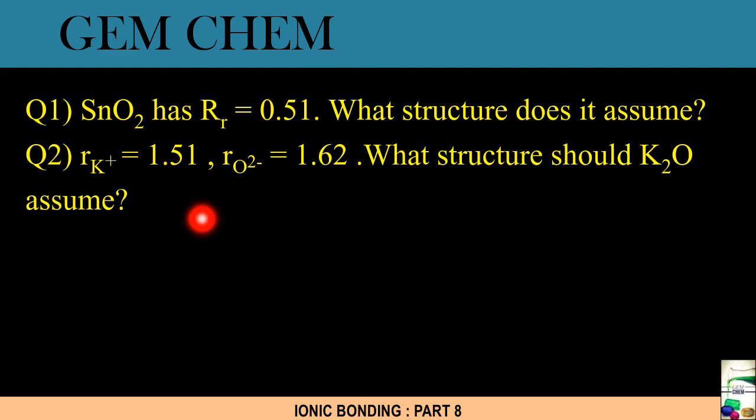Similarly there are two questions for you. Try to solve these questions on your own, where we have taken SnO2 where radius ratio is given, and in this case K2O where radius ratio is not given. You have to find out and then write down what structure does it assume. So take a screenshot.